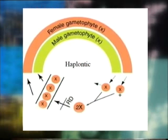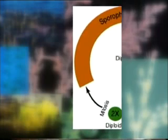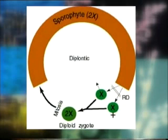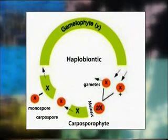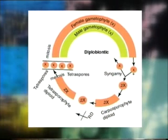Now, we know that there are five types of algal life cycles. Number one, haplontic, which is characterized by dominance of haploid phase and zygotic meiosis. Second, diplontic, which is characterized by dominance of diploid phase and gametogenic meiosis. Third, diplo-haplontic, which is characterized by alternation of diploid sporophyte with haploid gametophyte. Fourth, haplobiontic, which is a triphasic cycle characterized by the occurrence of two haploid phases. Fifth, diplobiontic, also a triphasic life cycle characterized by the occurrence of two diploid phases in the life cycle.